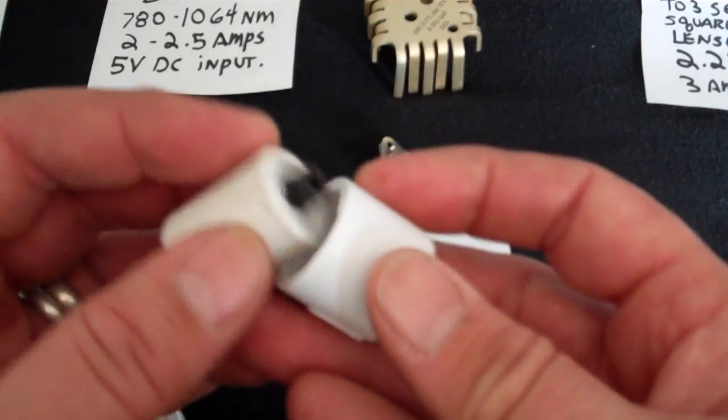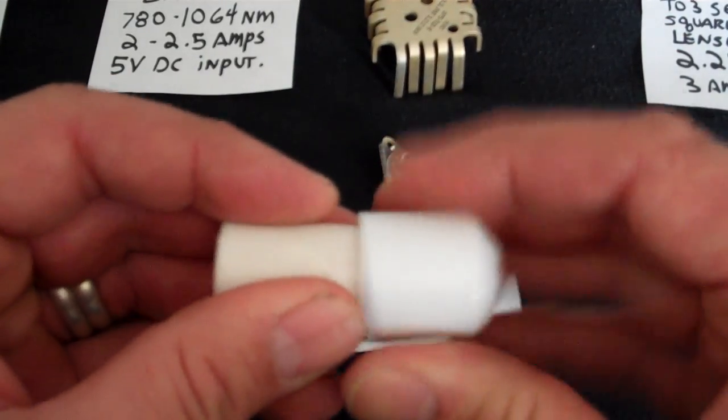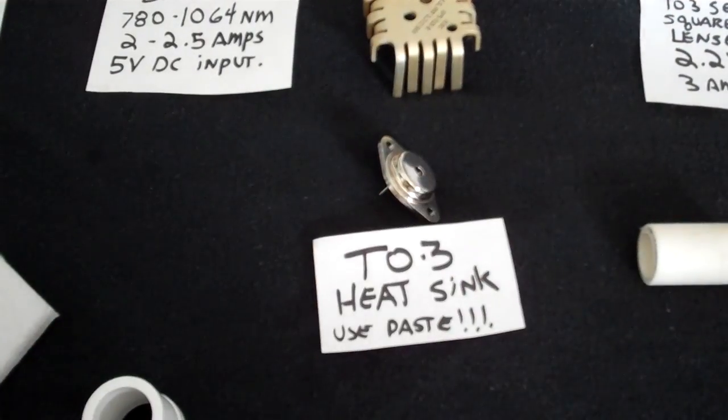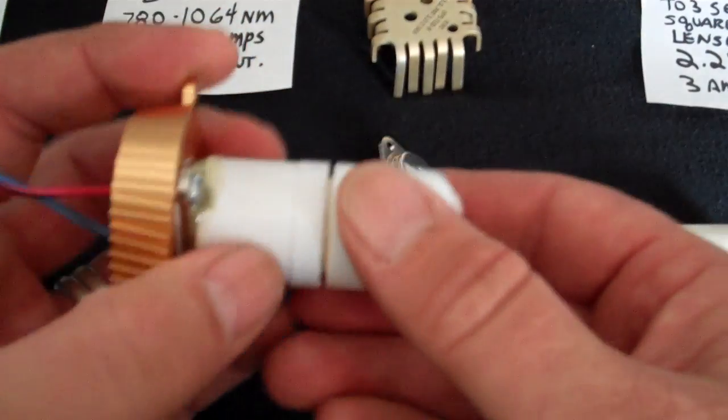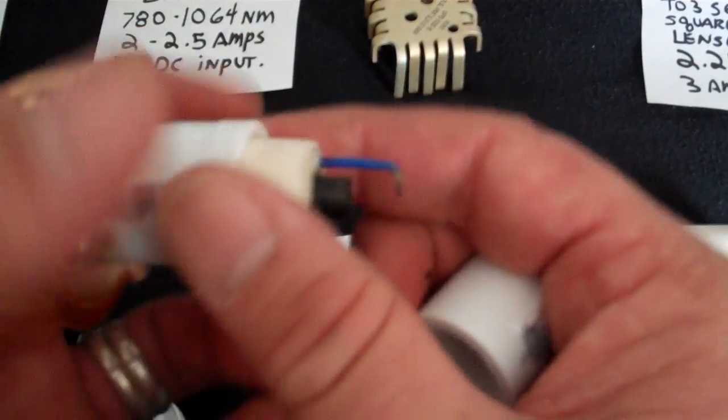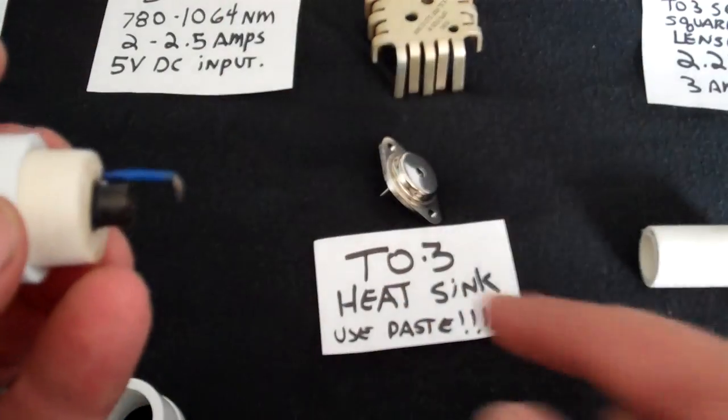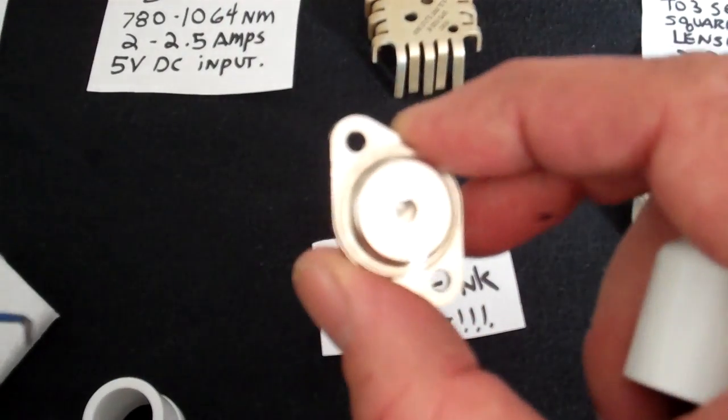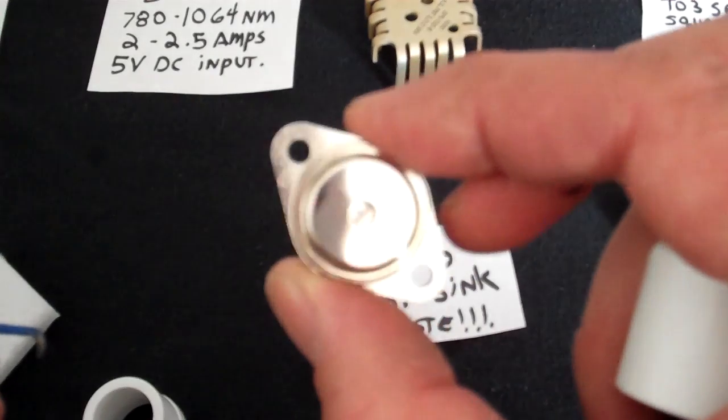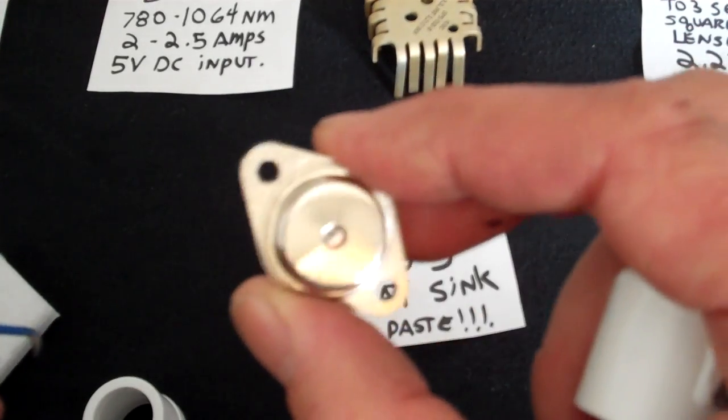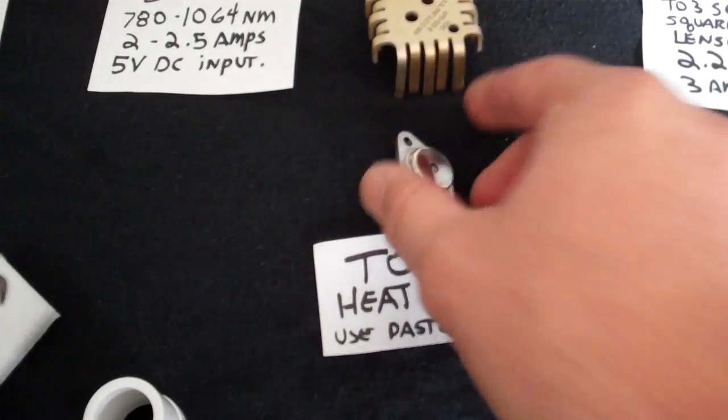And then obviously this cap fits nicely to cover everything and protect it like I did on this one. Now, this is very, very important. With this lens being so close to the diode. Oh, another thing about this diode. Order it with a square beam sealed lens. This thing has a lens built into this casing which gives it a square beam. Make sure you have that with it.